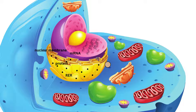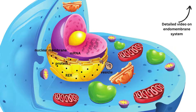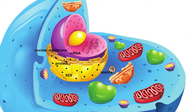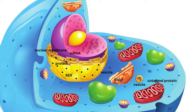The modified protein is then packaged in vesicles and transported to the Golgi apparatus, which is in close proximity with the RER. The vesicle fuses with the Golgi apparatus, where it is sorted and properly tagged. If it is untagged, the protein is further packaged in a vesicle and moves out of the cell by exocytosis, or is secreted out of the cell.